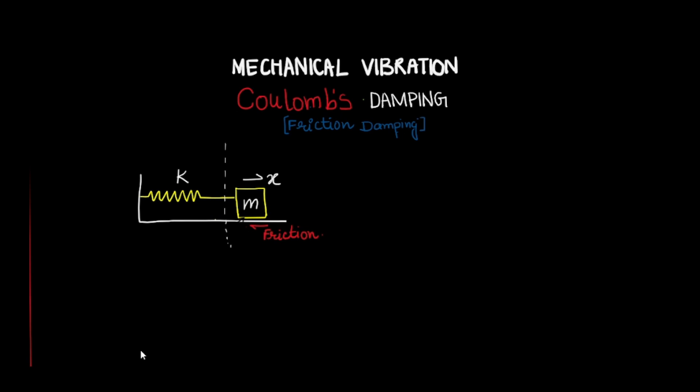In traditional viscous damping, the equation of motion is mx-double-dot plus cx-dot plus kx equals F for forced vibration, or zero for free vibration. This cx-dot term represents the damping force. But here, instead of a damper mechanism we have friction damping, and importantly the direction of the friction force is always opposite to the direction of velocity.